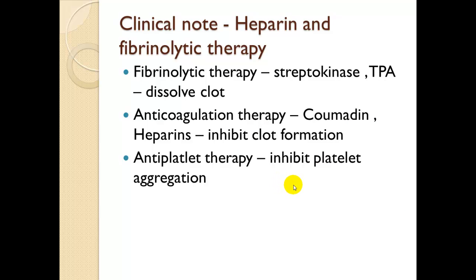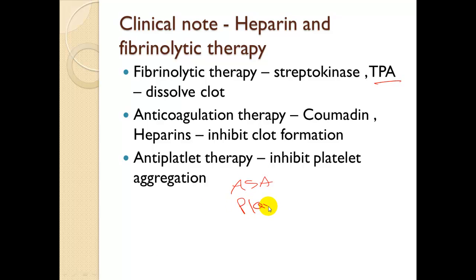Clinical note on heparin and fibrinolytic therapy. Fibrinolytic therapy — agents like streptokinase and tissue plasminogen activator (TPA) — dissolves the clot. Anticoagulant therapy, such as coumadin and heparin, inhibits the formation of the clot by adjusting thrombin formation. Antiplatelet therapy inhibits platelet aggregation; examples are aspirin and Plavix. Fibrinolytic therapy is currently used on strokes.